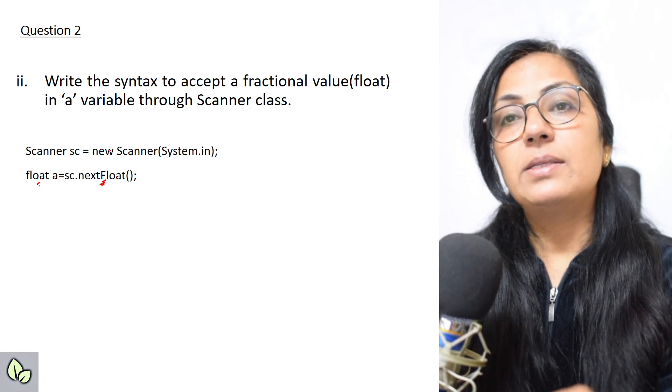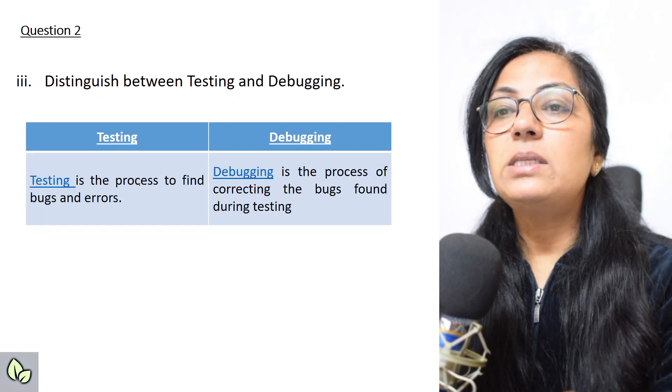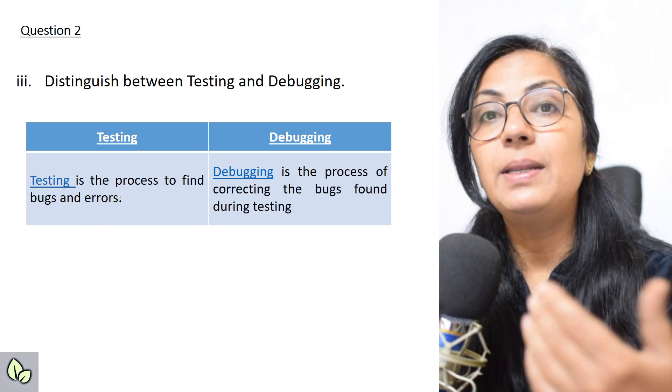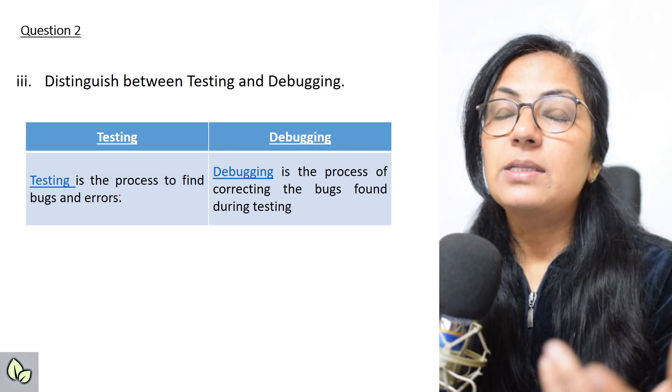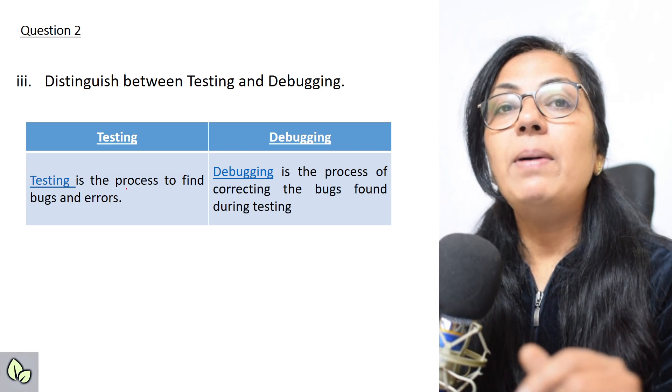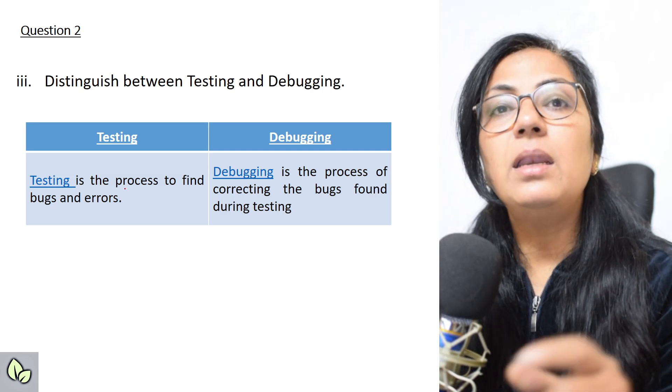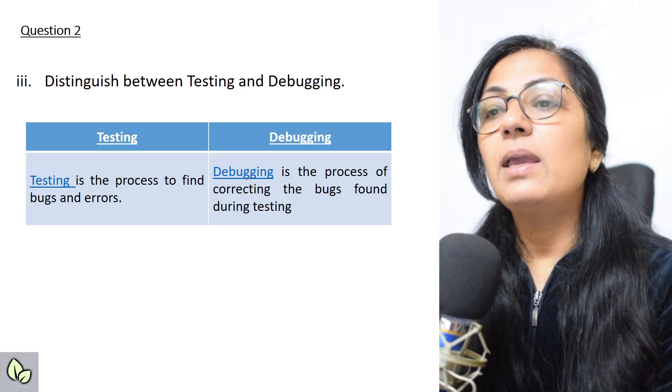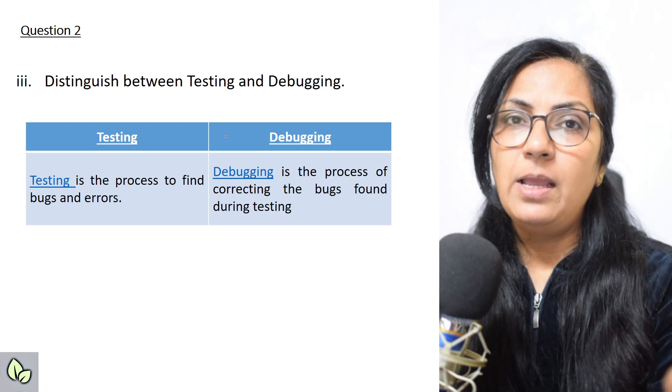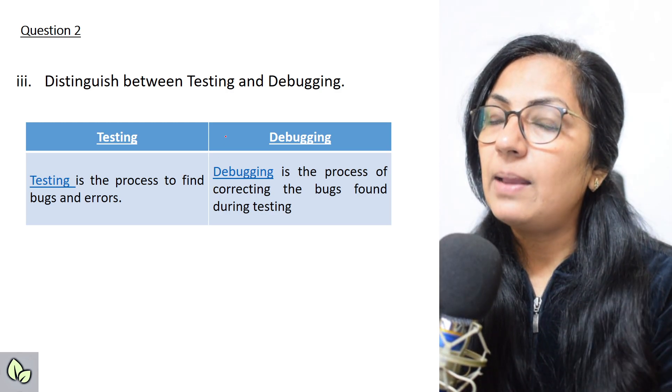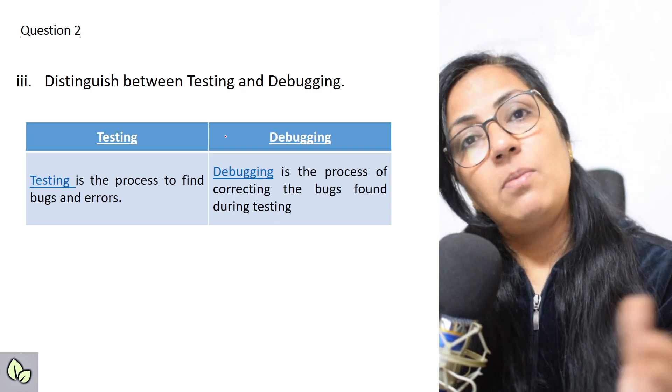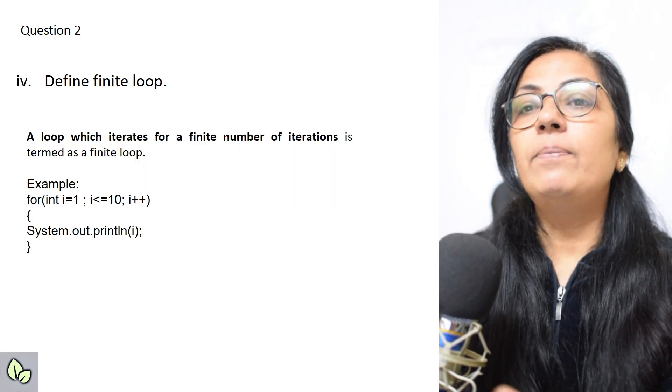The next one: distinguish between testing and debug. Testing is a process to find bugs and errors. When we test the program, whether it is giving us the desired result or not, that is testing. Debugging, bug means error, debugging means removal of that error. So debugging is the process of correcting the bugs found during the testing. Whatever errors we found during testing time, debug is removal of errors. So please prepare this as well.